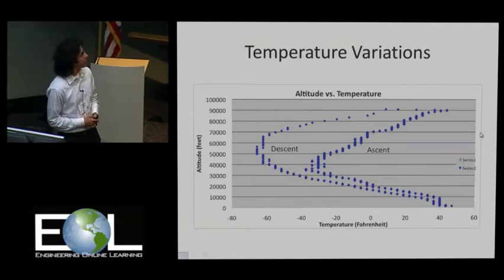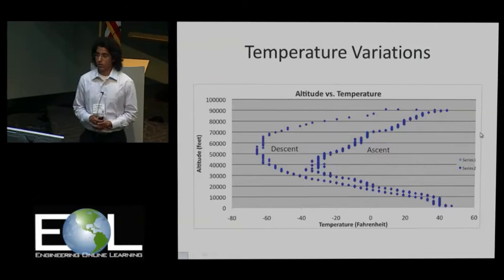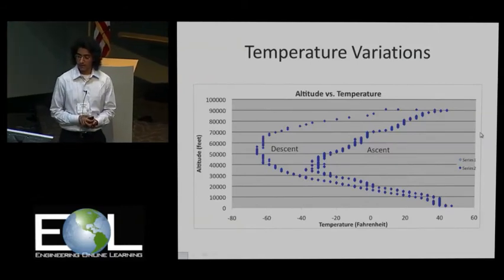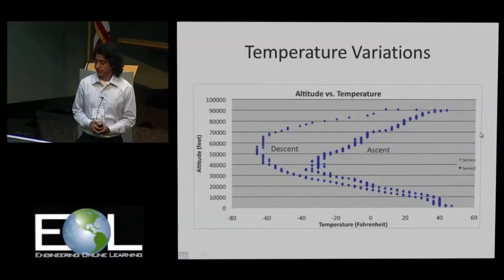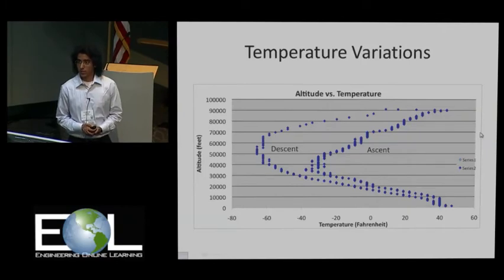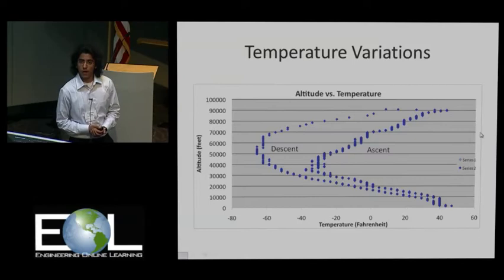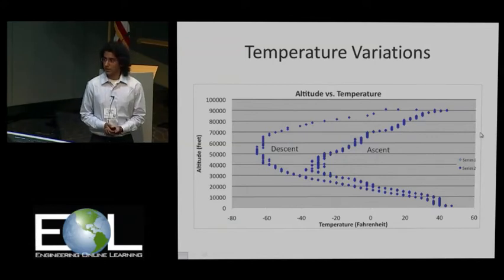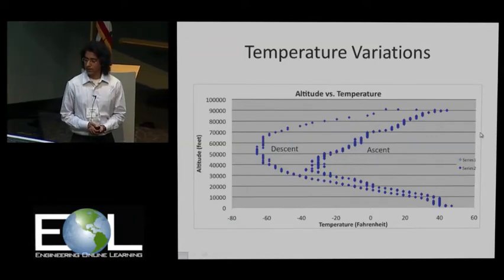The temperature variations followed a normal trend too. Temperature went down to almost negative 46 degrees Fahrenheit at 34,000 feet, and then continued to increase until the burst. The temperature change during the descent was much more drastic, and our team figured that could be due to the windchill factor, though other factors might also need to be taken into consideration.